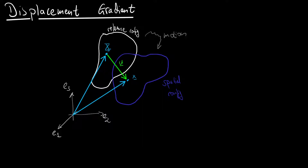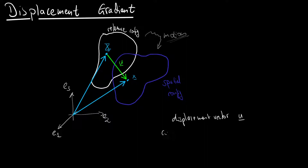We have a coordinate system describing two configurations: a reference configuration and a spatial configuration. So we have two potatoes, and we transform the first potato into the second potato. The change in configuration is called our motion. If we look at particular continuum particles in our configurations and track them, we see that they are displaced, and the displacement of their position is a u-vector. The displacement vector contains all the information on the change of our potato.